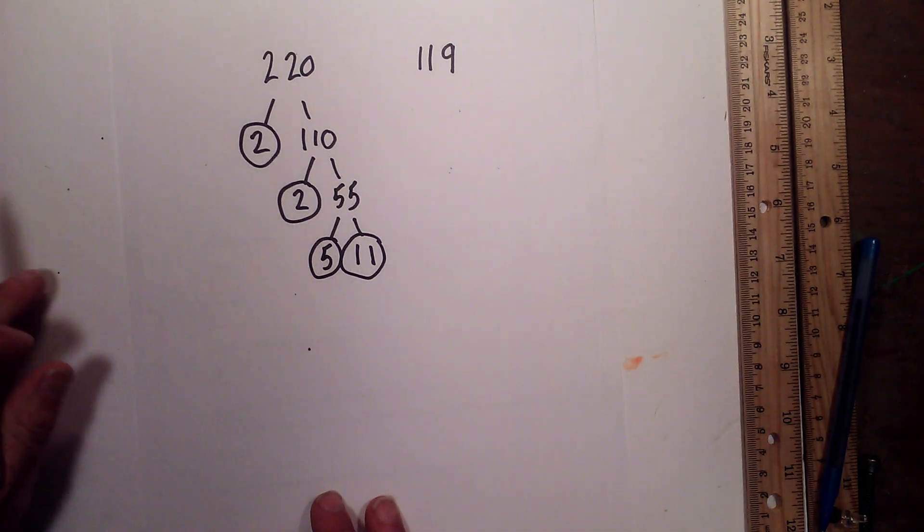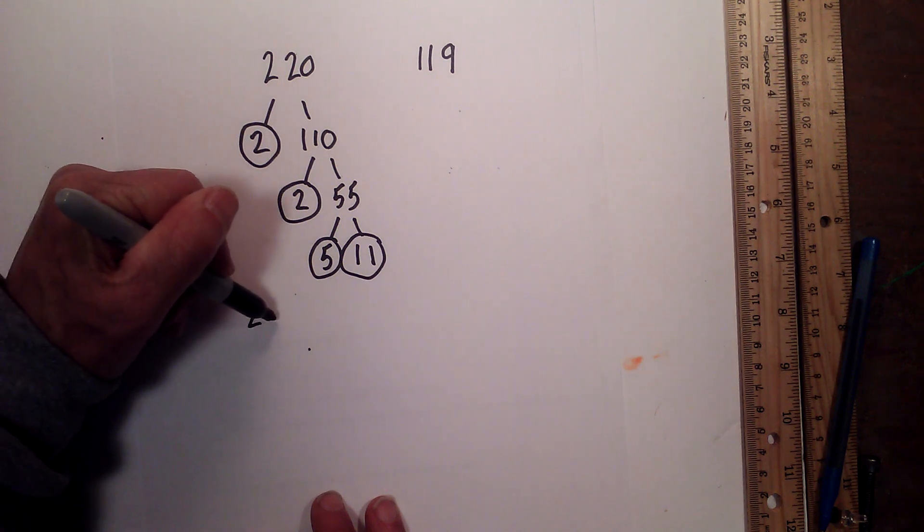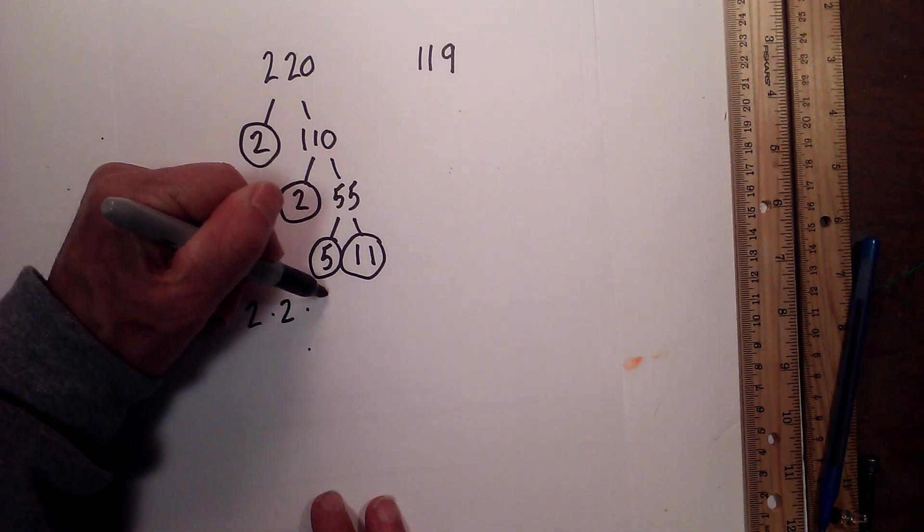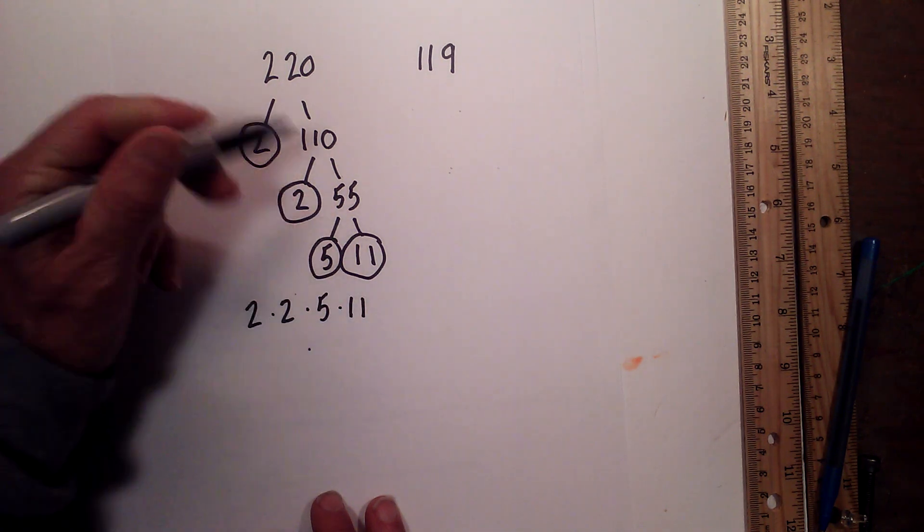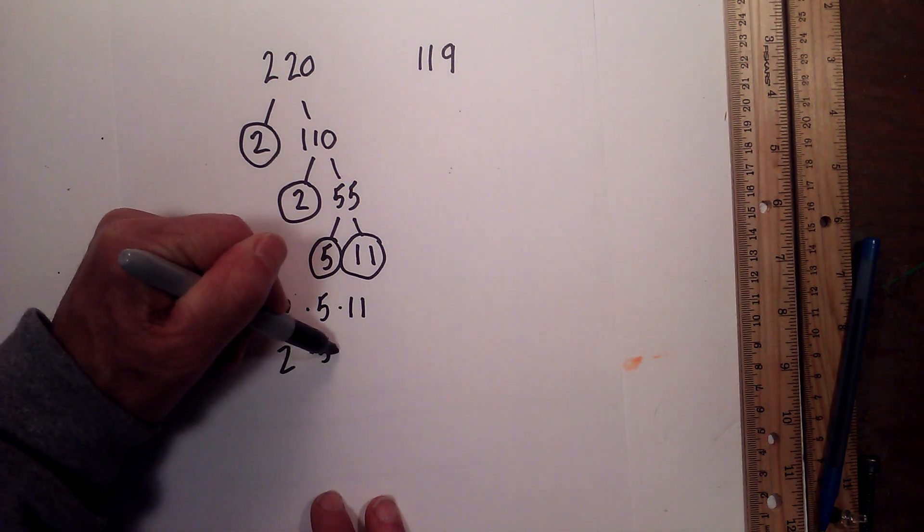So I am now finished because I am down to just prime numbers. So the prime factors for 220 are 2 times 2 times 5 times 11, or 2 squared times 5 times 11.